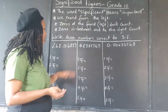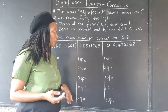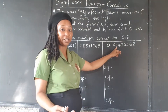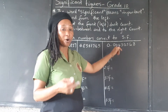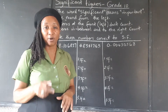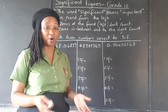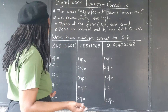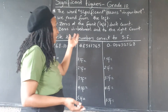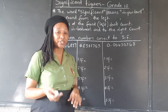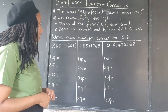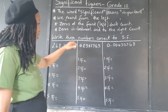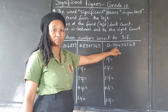Zeros at the front or to the left don't count. So if the number begins with one zero, two zeros, three zeros, we don't start counting there. We start counting at the first non-zero whole number — in other words, we start counting at the first counting number, from one to nine. Zeros in between and to the right, they matter, especially in the whole numbers. We count those zeros, we don't count the leading ones.